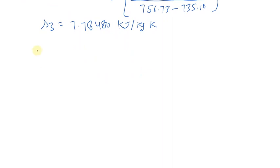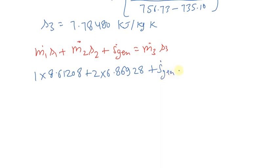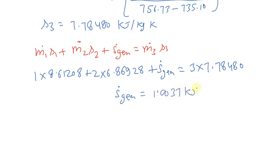Now let's write the entropy equation: M1-dot × S1 + M2-dot × S2 + S-dot-generation = M3-dot × S3. Substituting all values: 1 × 8.61208 + 2 × 6.86928 + S-dot-generation = 3 × 7.78480. Further calculation gives S-dot-generation = 1.0037 kJ per kg Kelvin.